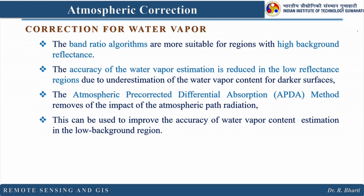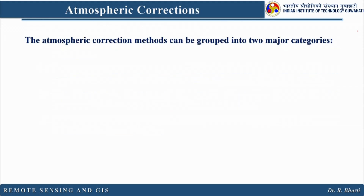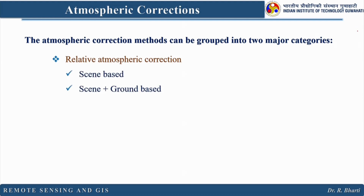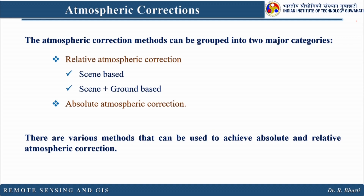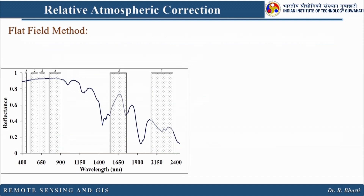The accuracy of water vapor estimation is reduced in low reflectance regions due to underestimation of water vapor content for darker surfaces. The APDA method removes the impact of atmospheric path radiance and can be used to improve water vapor content estimation in low background regions. Atmospheric correction methods can be grouped into two categories: relative atmospheric correction (scene-based and ground-based) and absolute atmospheric correction. In relative correction, standards are used to correct images; in absolute correction, all atmospheric constituent parameters must be known and the atmosphere is modeled.